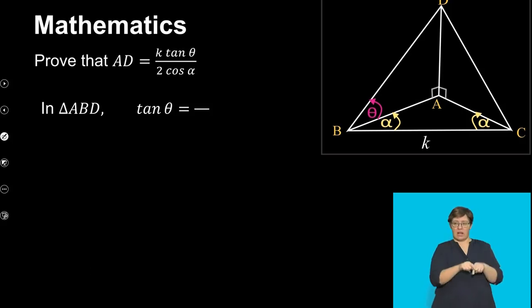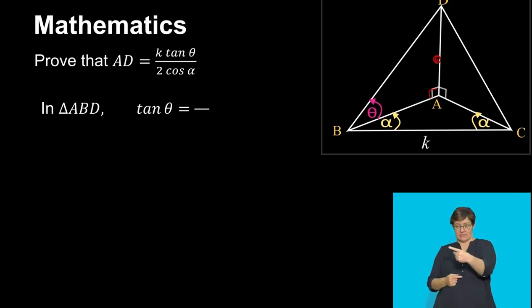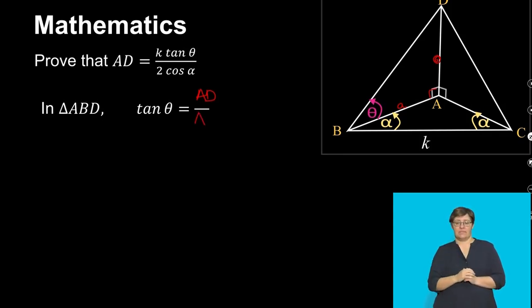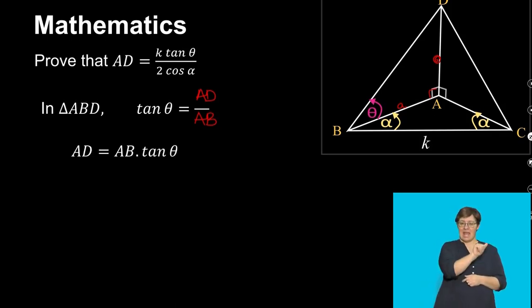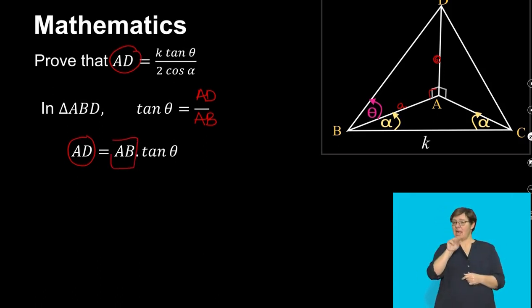In triangle ABD, which is right-angled at A, we have θ and we want to express AD. AD is the opposite side, so tan θ = AD / AB. Rearranging: AD = AB × tan θ. We'll leave this for now and go find AB from the horizontal triangle.